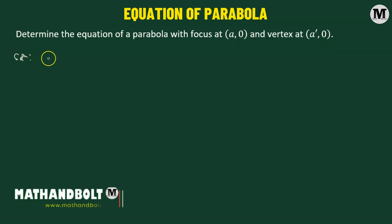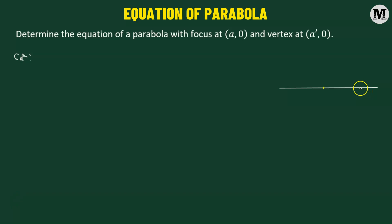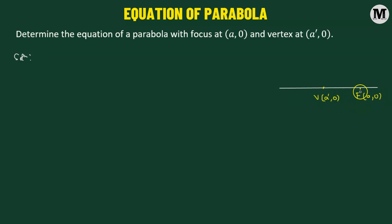We'll try to understand the problem graphically first. We begin by considering a straight line, and on this line we are going to consider two points. One point is denoted by V with coordinates a prime, 0, and the other point is denoted by F with coordinates a, 0. V represents the vertex of the parabola and F is the focus. By definition, any line containing the vertex and the focus is referred to as the axis of symmetry line.